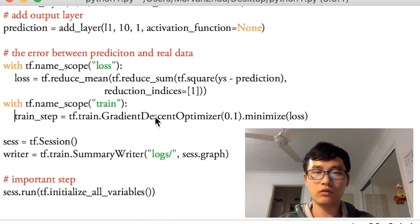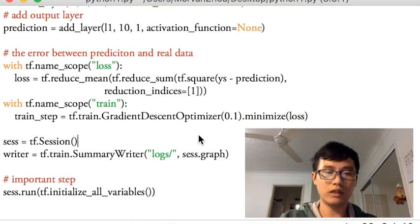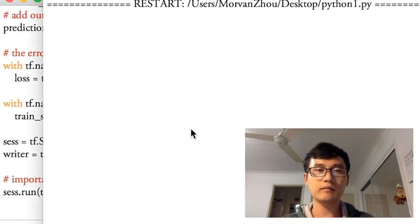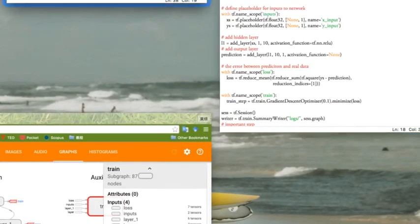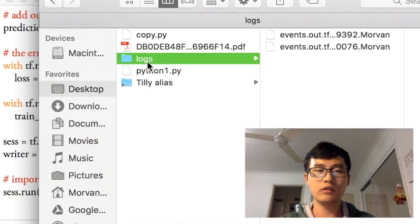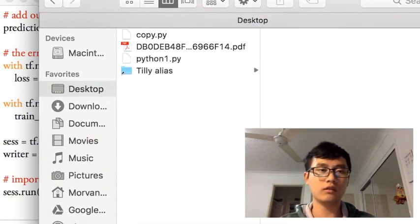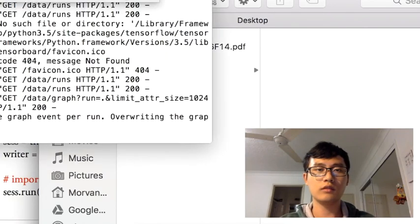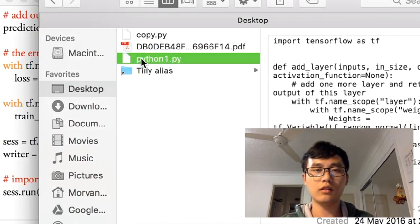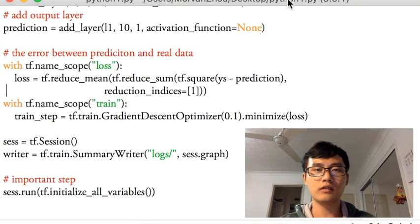I think that is all. So we'll just run it. Before I run this, I will show you. I will just delete this one. So right now, this script is stored in this file, Python 1. And by running this script, I will create a folder on my desktop. This folder is actually the logs.